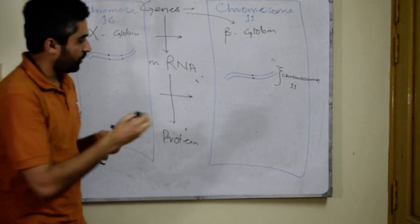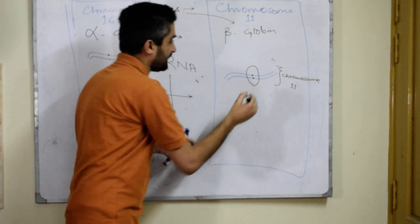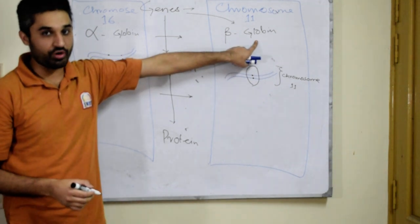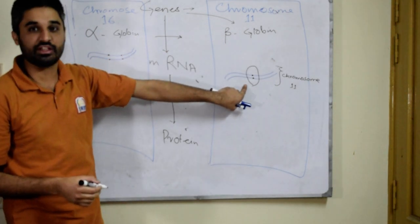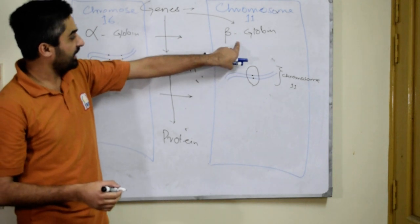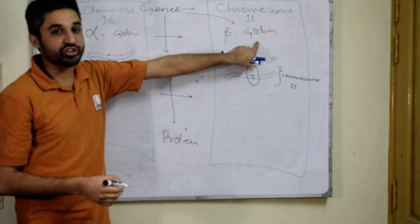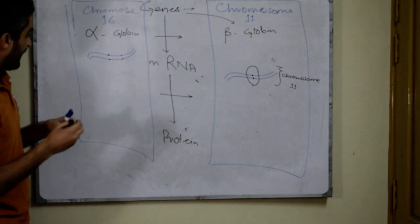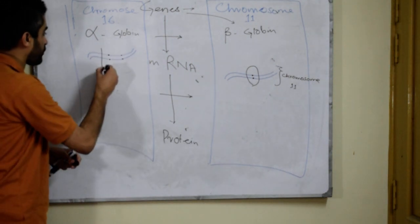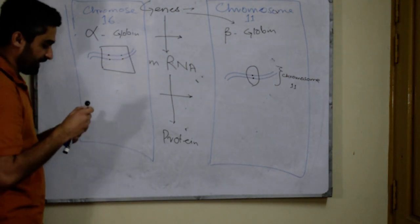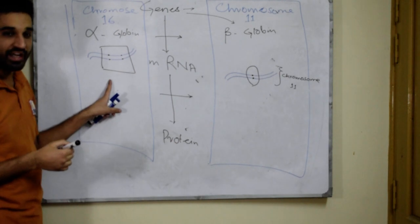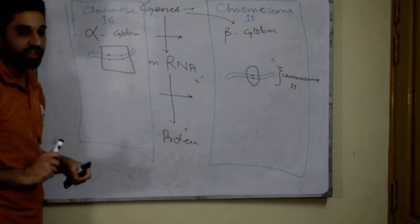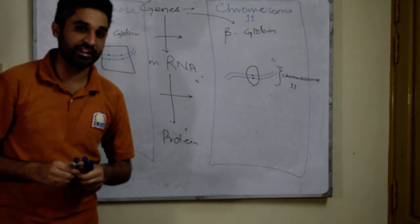If anything goes wrong with these two genes on chromosome 11, the beta-globin chain will not be formed or will be formed defectively. If anything goes wrong with any of these four genes on chromosome 16, the alpha-globin chain will not be synthesized.